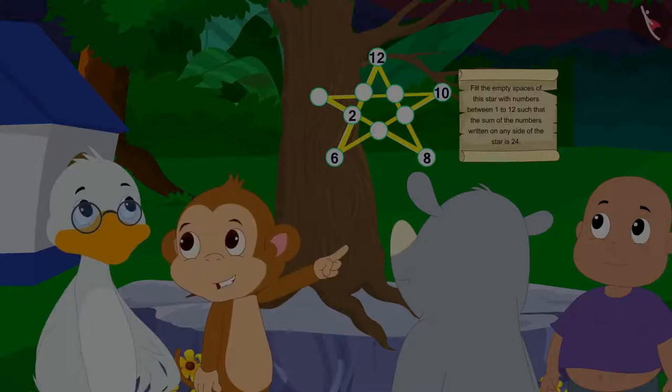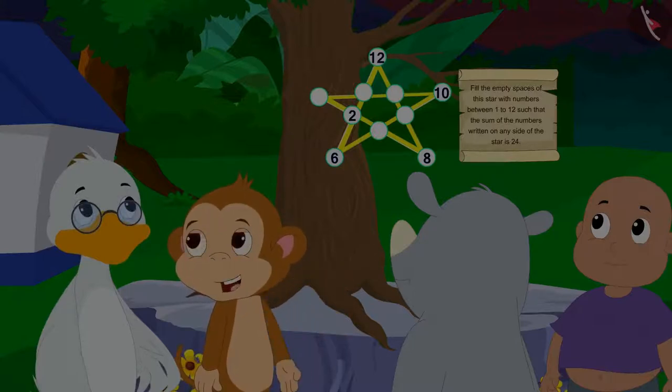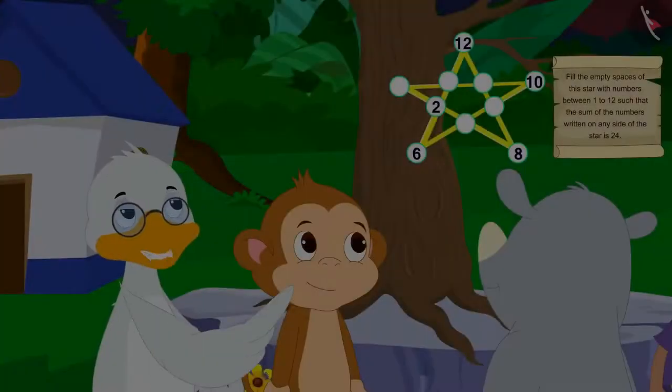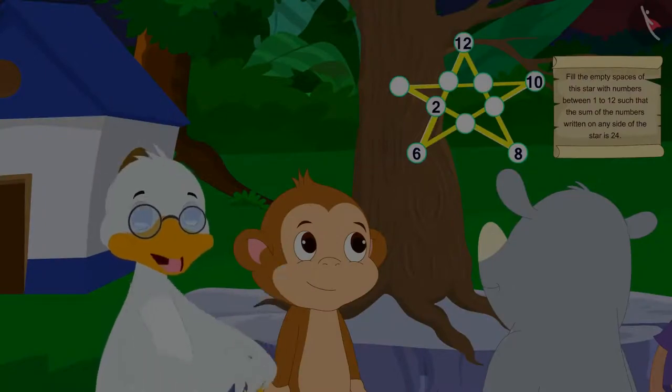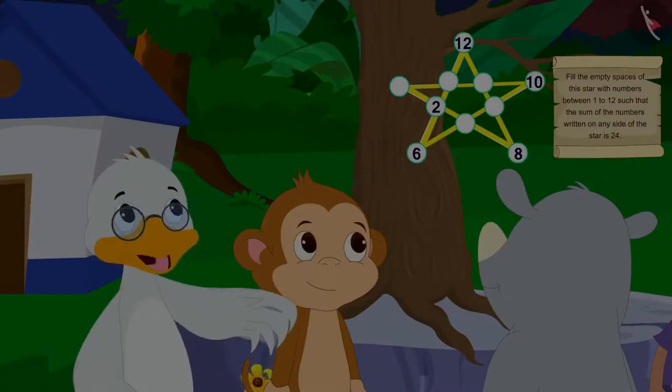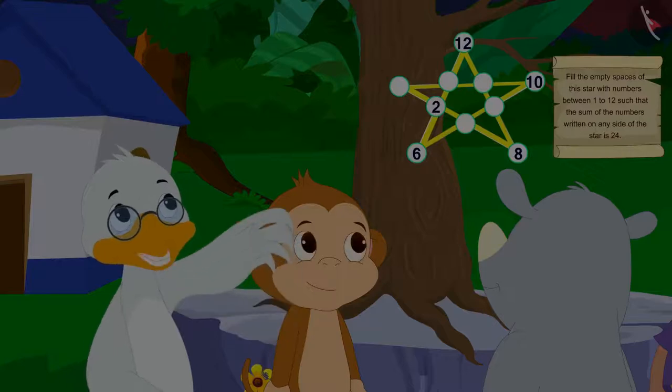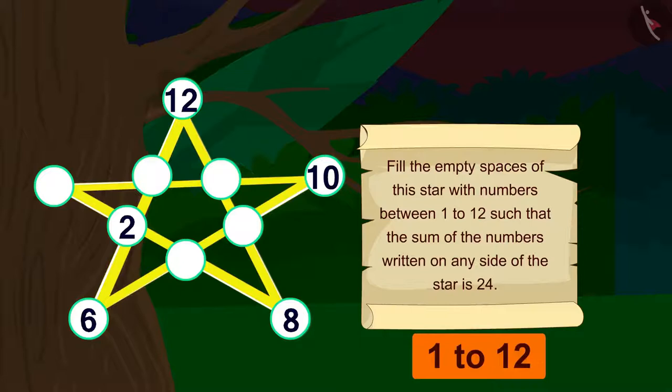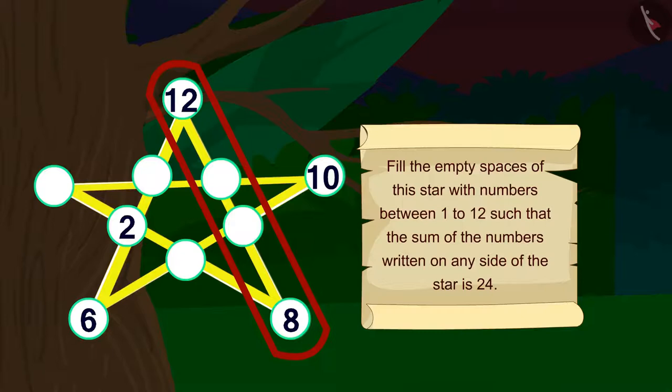But what could these numbers mean uncle? Babban asked the uncle. It looks like some kind of number pattern. Look here. It is written on the top. Fill the empty spaces of this star with numbers between 1 to 12, such that the sum of the numbers written on any side of the star is 24.